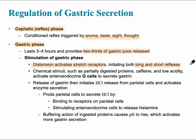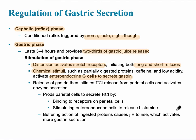There's a reflex within the stomach lining wall and also one outside of the stomach. There are also chemical stimuli — partially digested proteins, caffeine, low acidity, and things of that nature — that activate the enteroendocrine G cells to secrete gastrin, triggering a gastric secretion effect. The release of gastrin then initiates hydrochloric acid release from the parietal cells, which activates enzyme secretion.